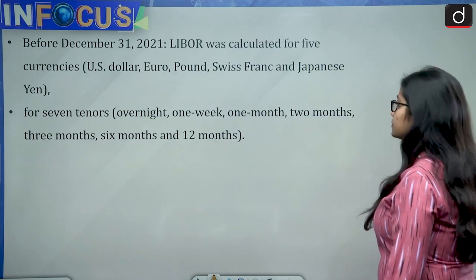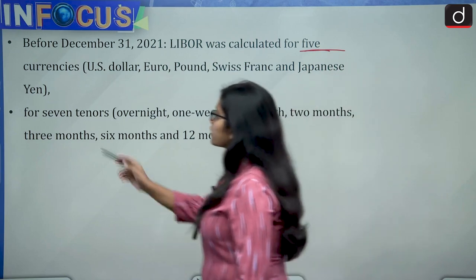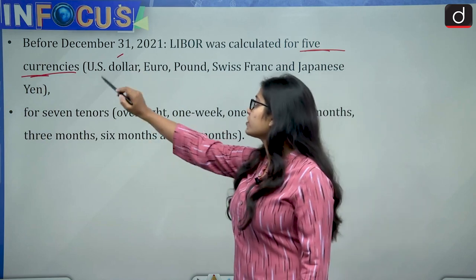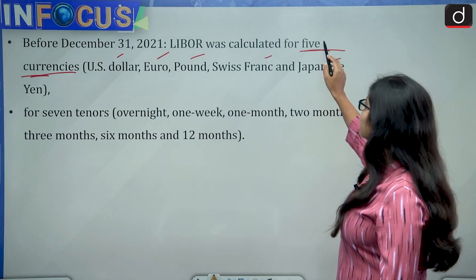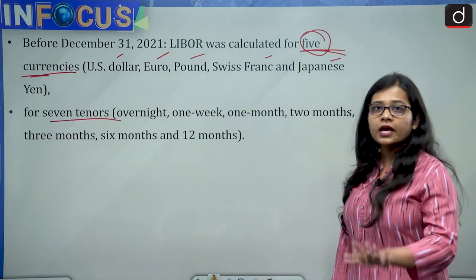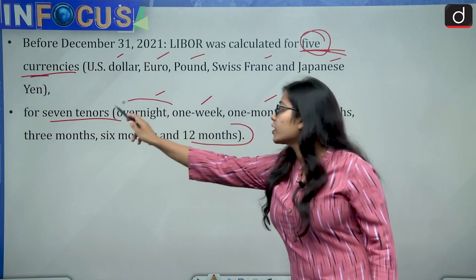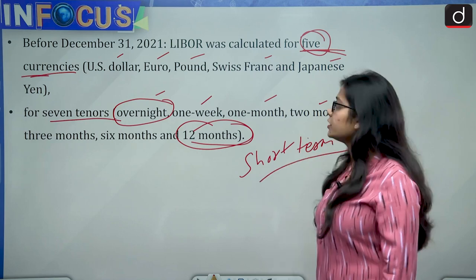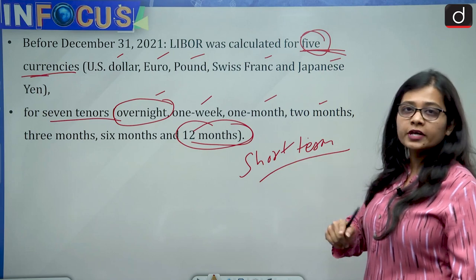Before December 31, 2021, LIBOR was calculated for five currencies: US dollar, euro, pound, Swiss franc, and Japanese yen — the most important currencies globally. It was also calculated for seven tenors or time periods: overnight, one week, one month, two months, three months, six months, and twelve months — meaning from overnight to one year. So LIBOR covered five currencies for short-term periods, representing the interest rate offered from one bank to another.